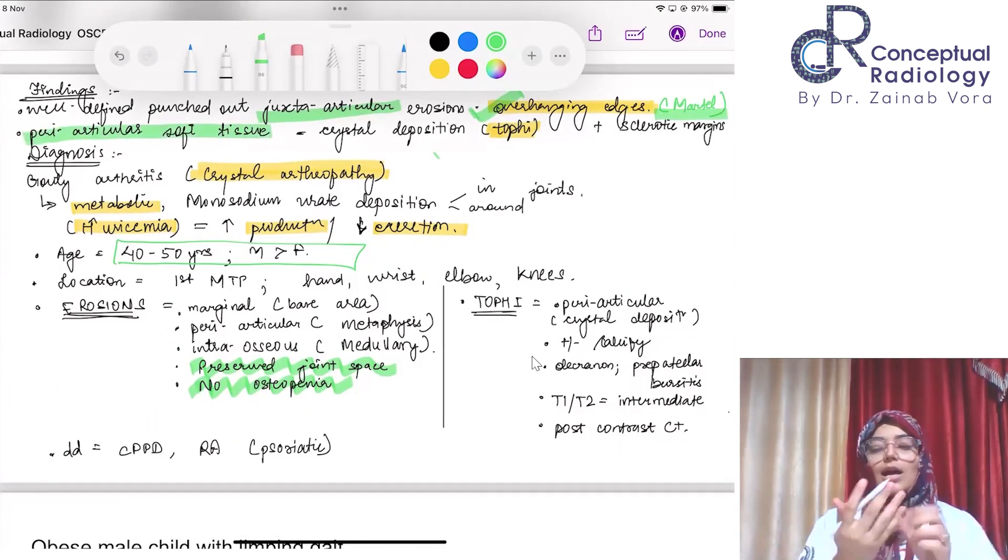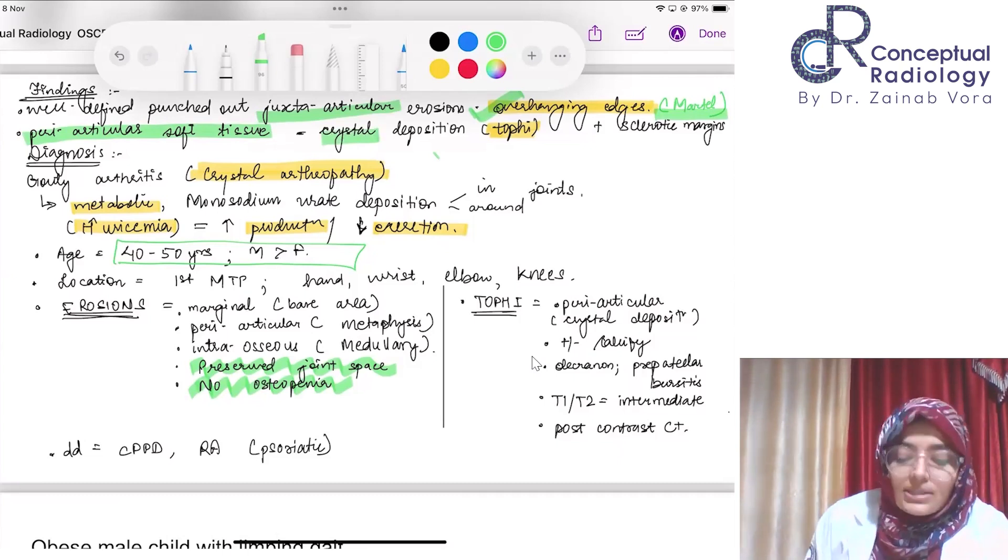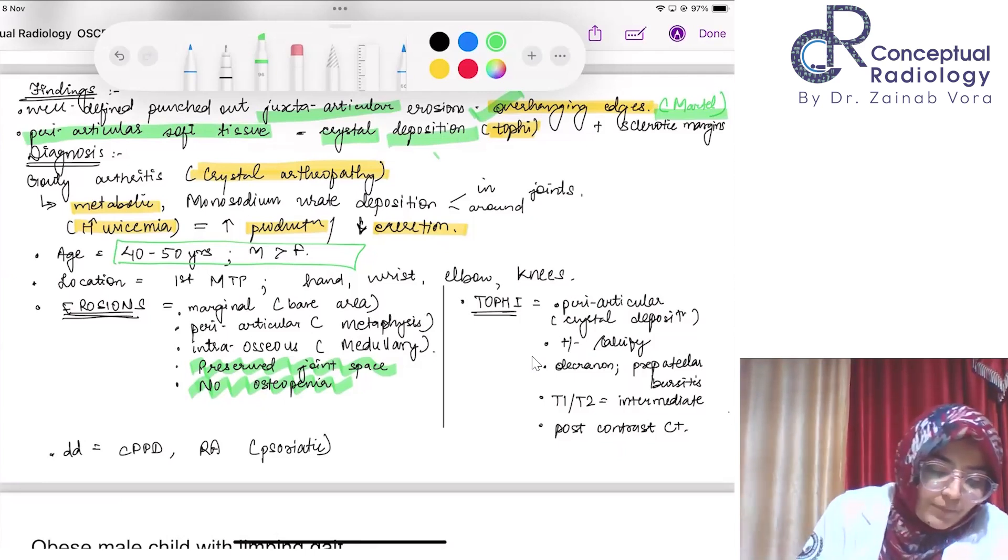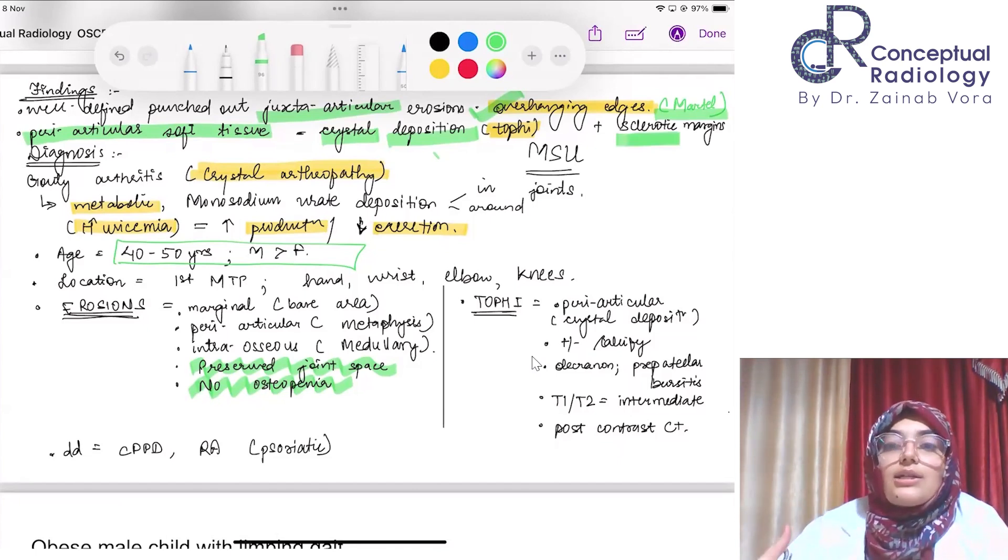Along with that, very important is periarticular soft tissue swelling. In rheumatoid arthritis, metatarsophalangeal joints and the PIPs show swelling. The tophi which forms causes soft tissue swelling and inflammation. Because it is gout, the crystal which is depositing is MSU, monosodium urate. There are going to be sclerotic margins because there is reactive bone formation. It's a relatively benign process, so there is time for new bone formation.